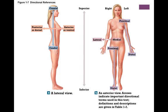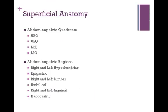Also note the directional terms: cranial is towards the head; caudal is towards the tail. Anterior is towards the front; posterior is towards the back. Proximal is towards the shoulder — or towards the hip. Distal is towards the fingertips — or towards the toes. Medial is towards the midline of the body; lateral is away from the midline of the body.